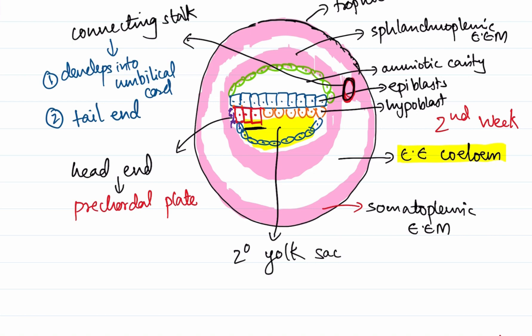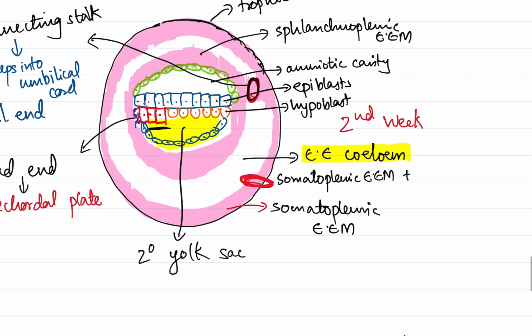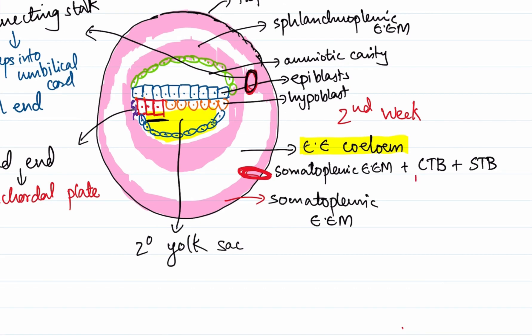There is an important term to define: a villus is the structure formed by the invasion of cytotrophoblast into the syncytiotrophoblast. Similarly, there is a structure called the chorion. The chorion contains the somatopleuric extra embryonic mesoderm plus the trophoblast — the trophoblast differentiated into a cytotrophoblast (CTB) and a syncytiotrophoblast. This whole structure is called the chorion.